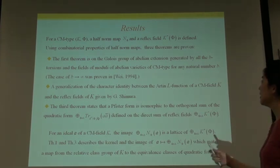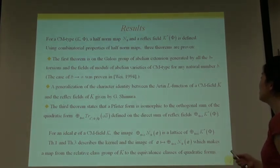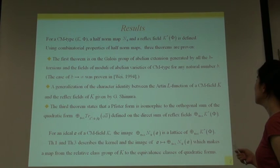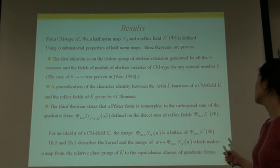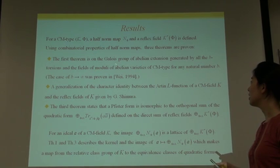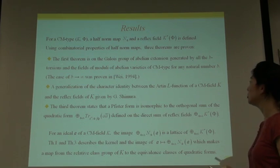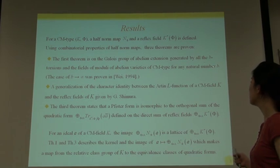For a CM-type K-phi, a half-norm map N-phi and a reflex field K-star-phi is defined. Using combinatorial properties of half-norm maps, three theorems are proved in my paper. The first theorem is on the Galois group of abelian extension generated by all the B-torsions and fields of moduli of abelian varieties of CM-type for any natural number B.